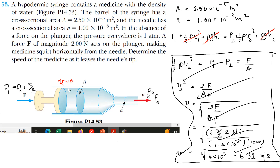At first, I used Bernoulli's equation and assumed that V1 is approximately zero, which is not true. Because anyway, the plunger will move and there is some velocity there. With that mistake — you can see the mistake on the right — the velocity turns out to be 632 meters per second, which is too much.